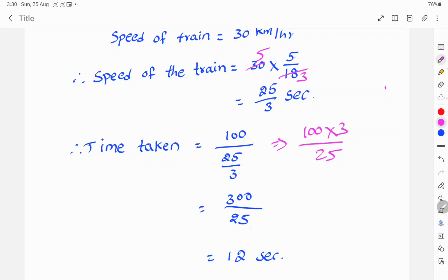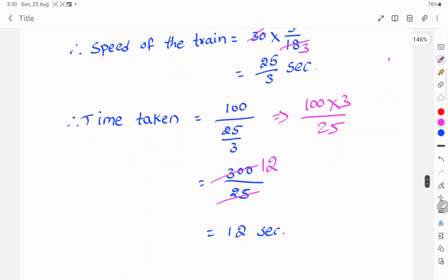So 300 by 25. 25 cancels 300 in 12 times, not 12 seconds. Time taken is, time taken is 12 seconds.